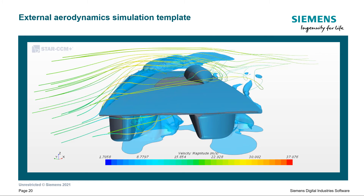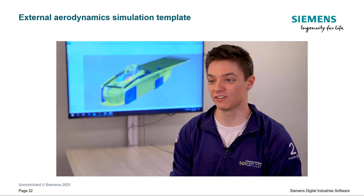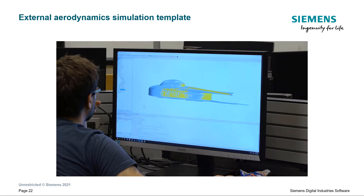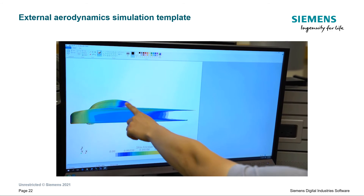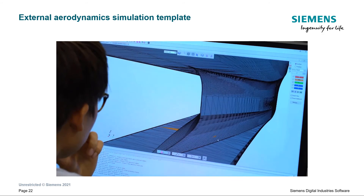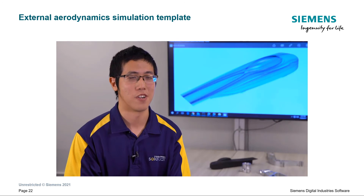In the solar car simulation template, you can easily rotate the car geometry to see how crosswinds affect stability — very important because, as seen in previous World Solar Challenge years, strong winds caused the leading car to roll off the road. The University of Michigan solar car team shared this concern, noting that winds in the outback and gusts from road trains were significant factors. Using Star-CCM+ to simulate those conditions was extremely helpful. The team noted it became the workhorse of their aerodynamics division, running two to three times more simulations compared to 2015.